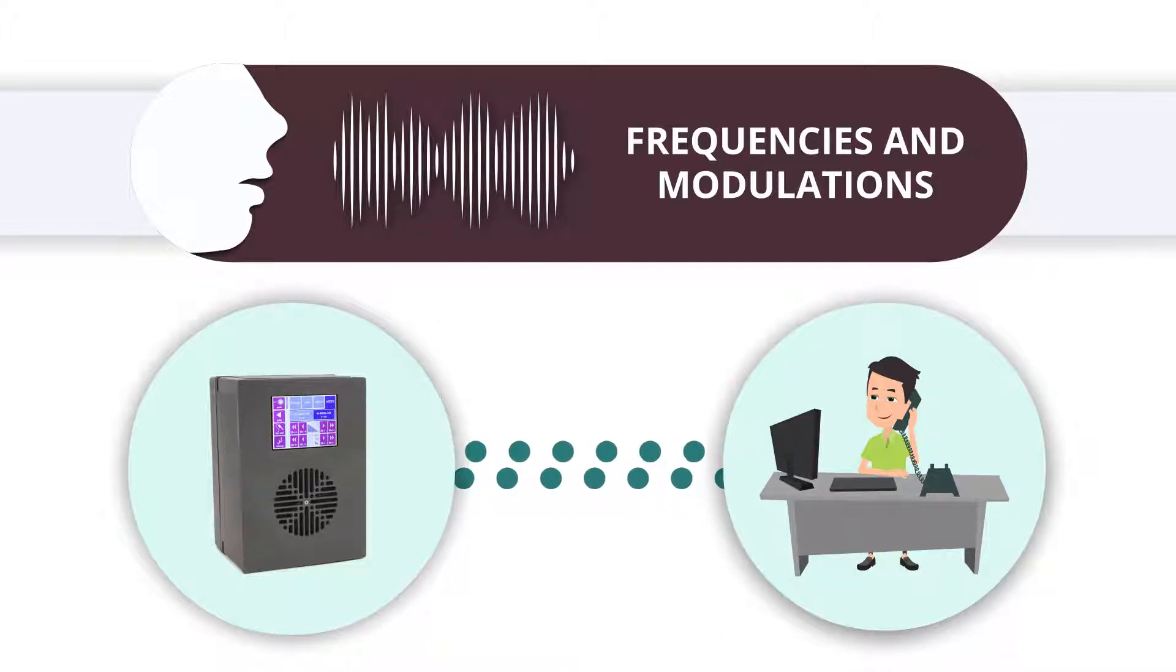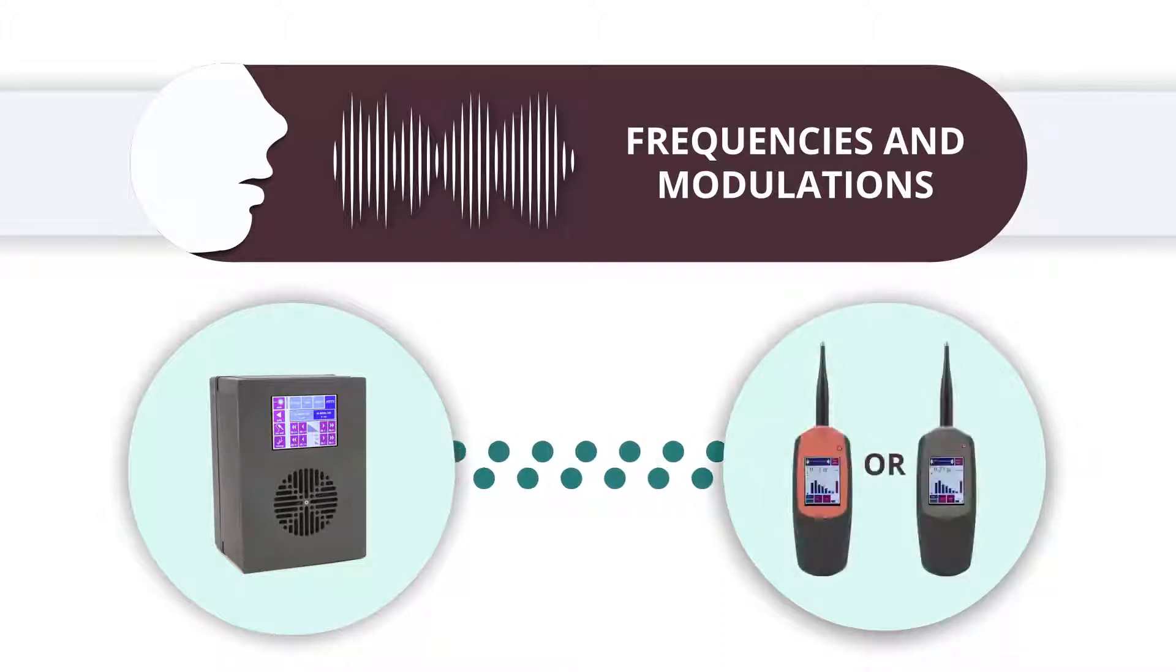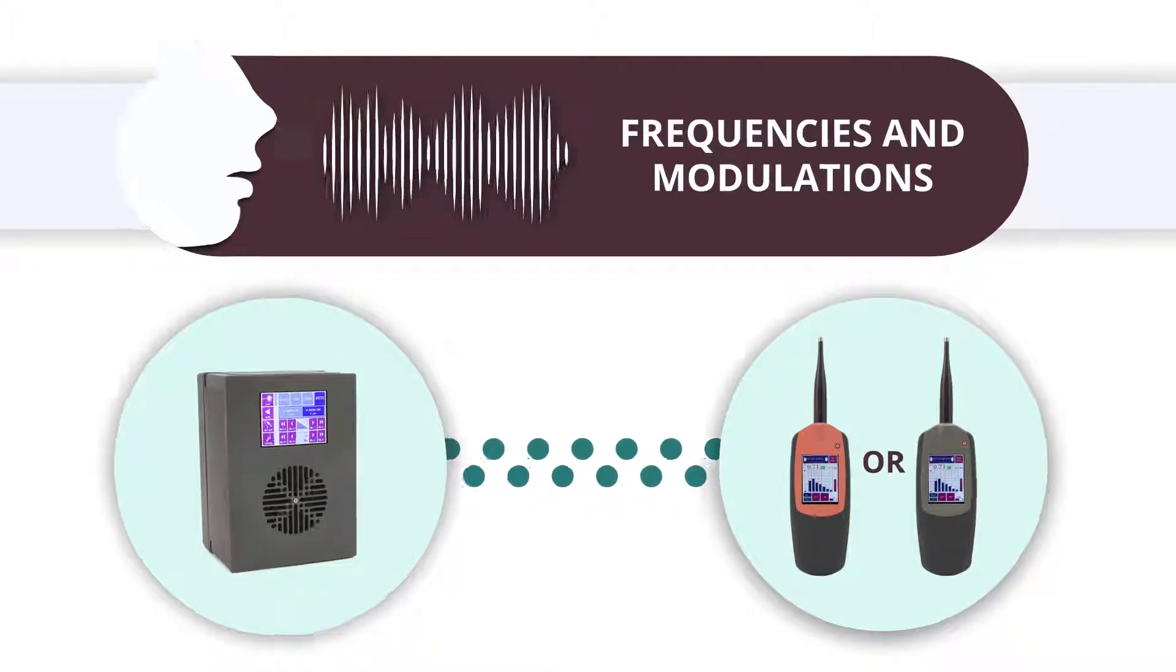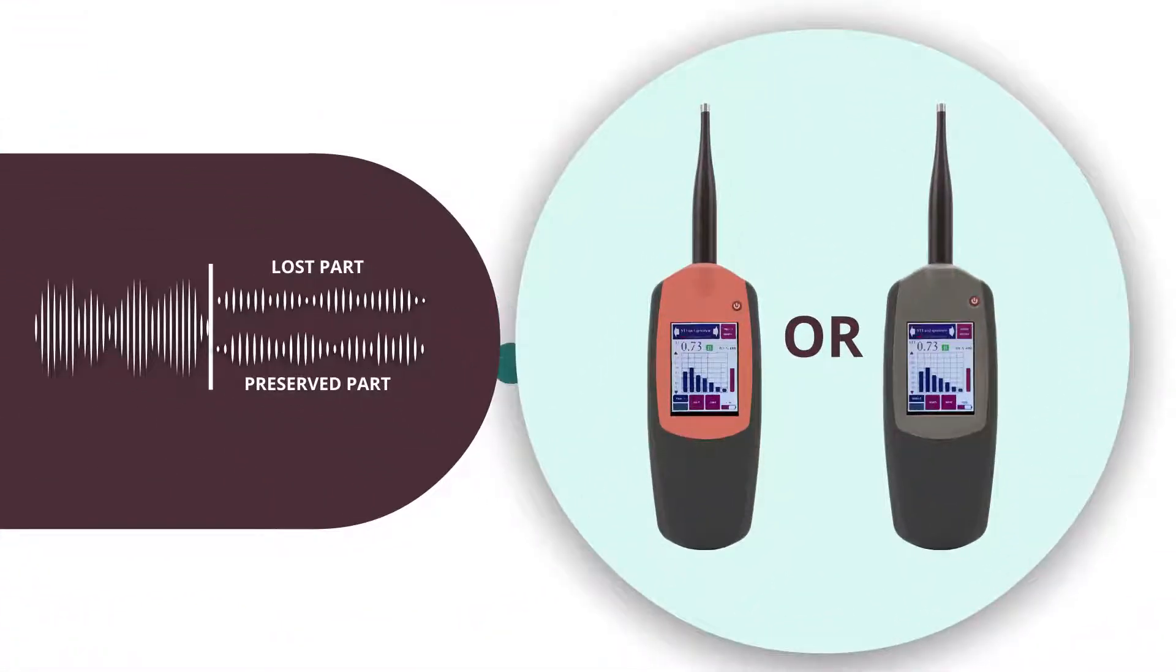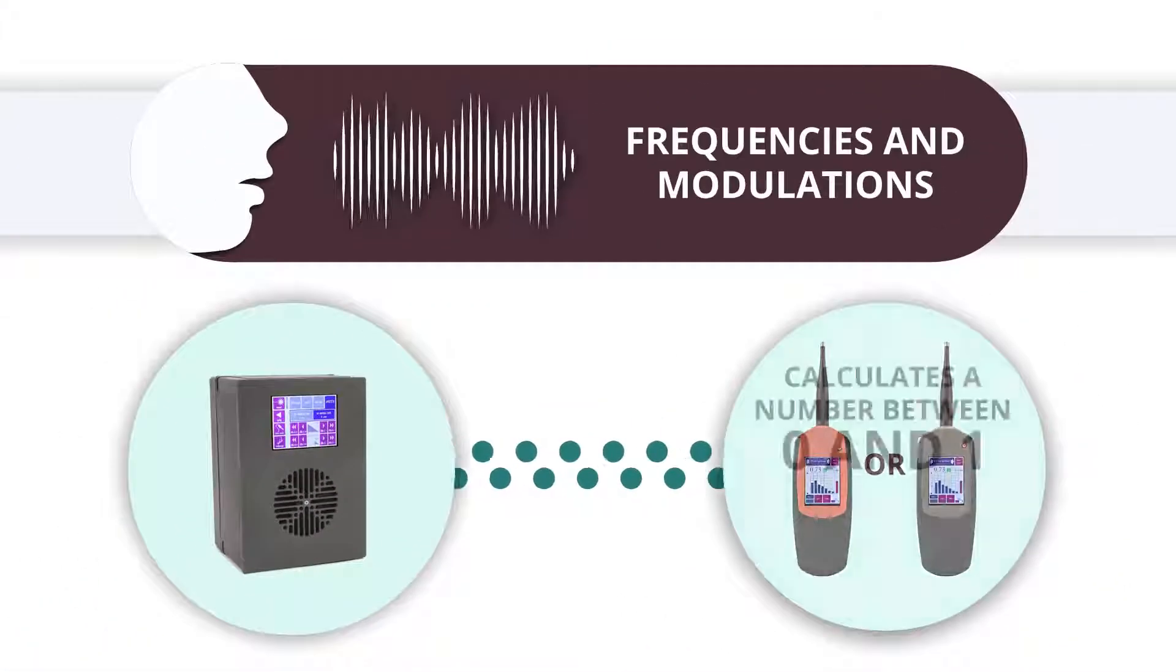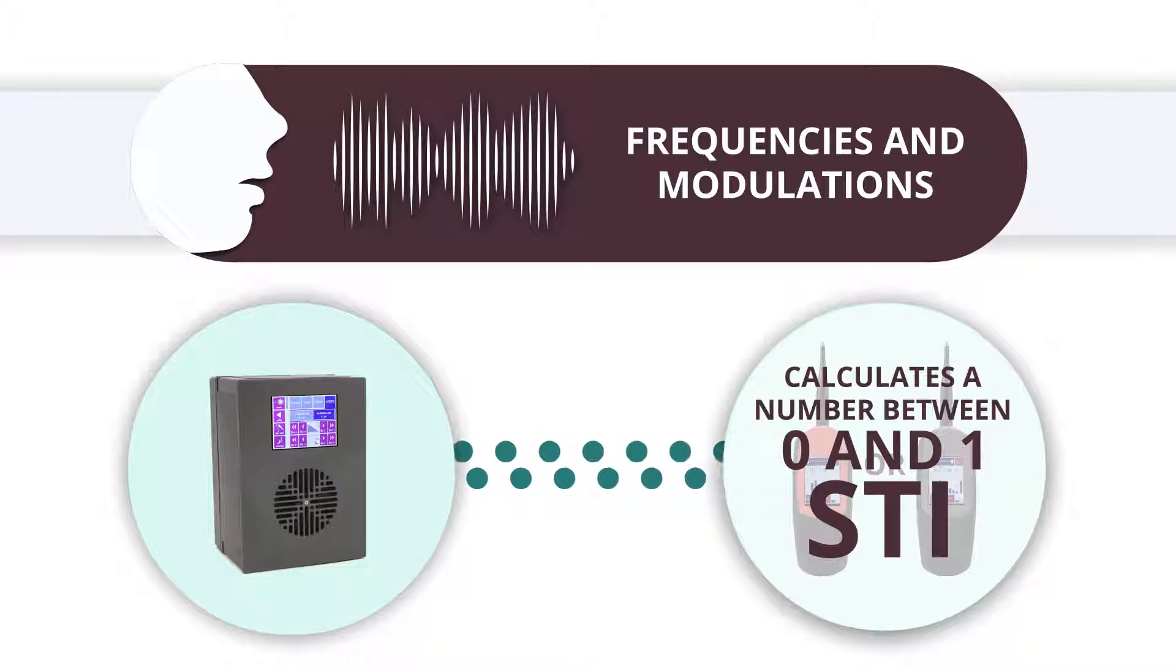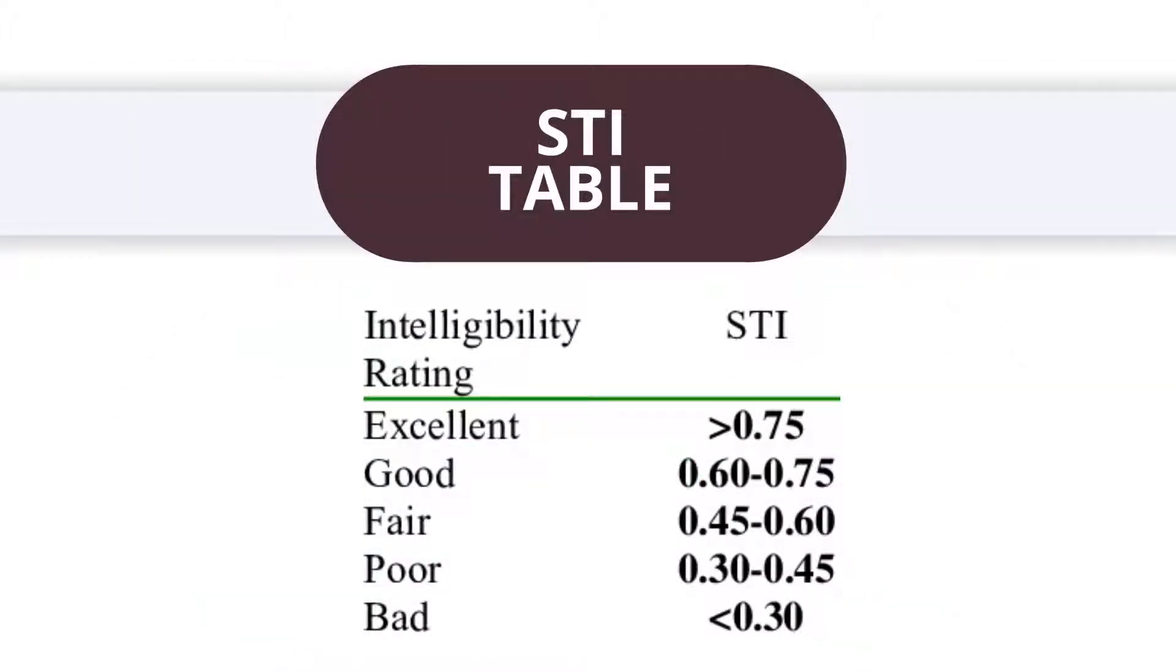On the other side of our phone line, we replace the listener with an STI analyzer, our Bedrock SM50 or SM90. This analyzer decodes which parts of the signal are lost and which parts are preserved. It then calculates a number between 0 and 1 called the STI. The STI scale tells us exactly what level of intelligibility to expect.